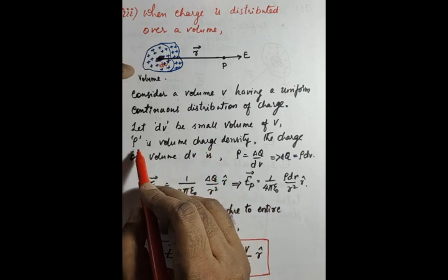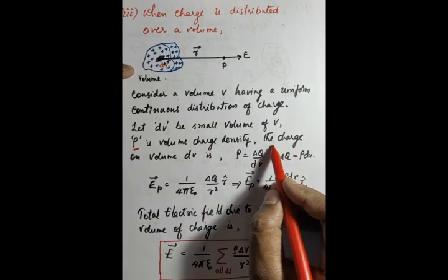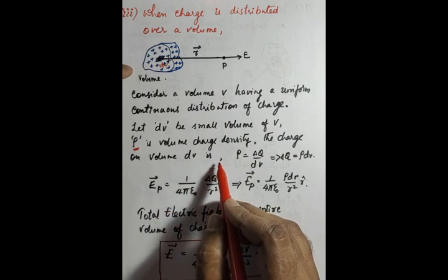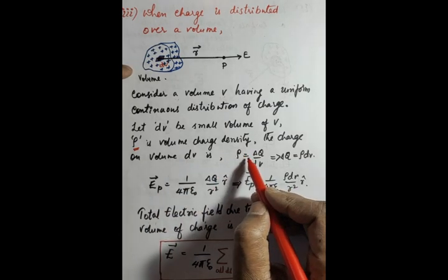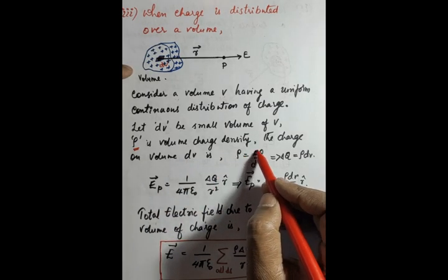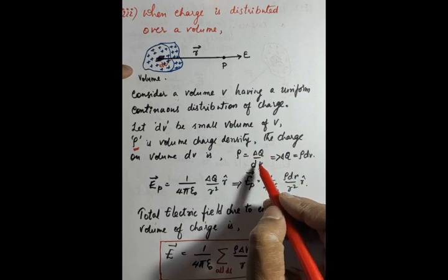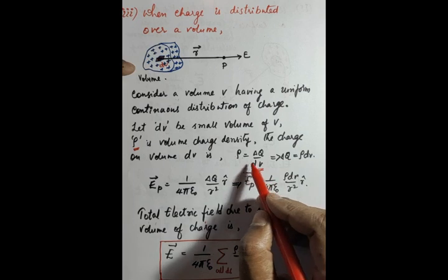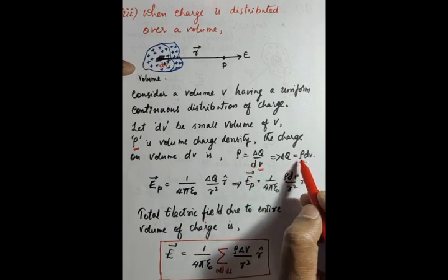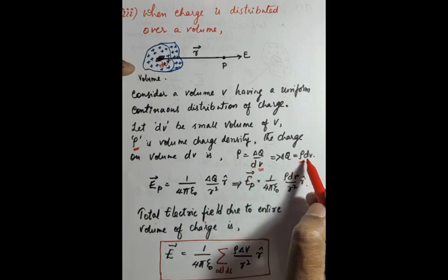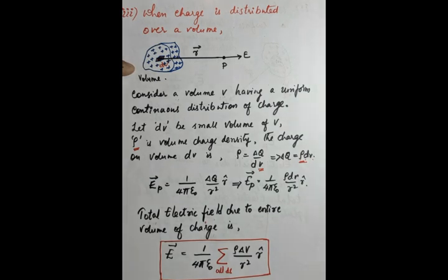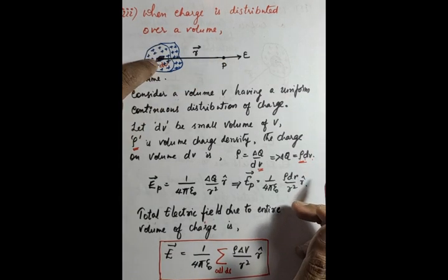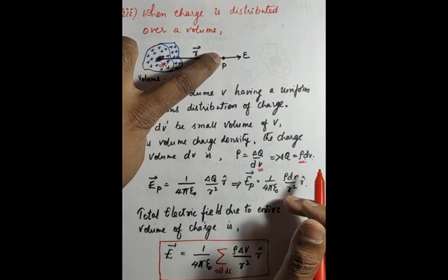Rho (ρ) is defined as: ρ = δq / dv, so δq = ρ · dv. We consider a small volume dv, and the charges present in it produce an electric field at point P. We will now substitute this into the electric field formula.